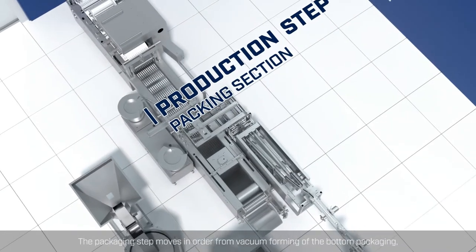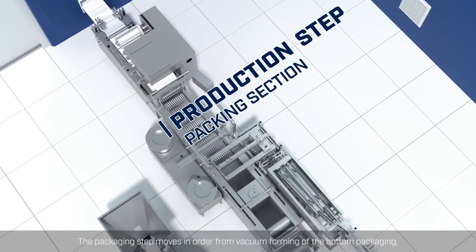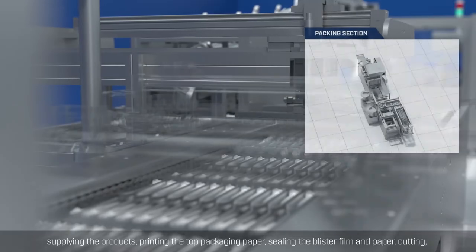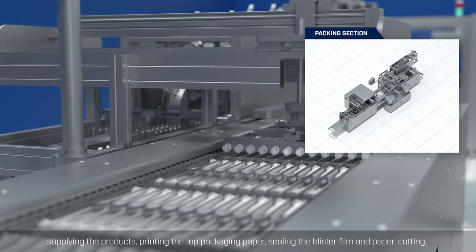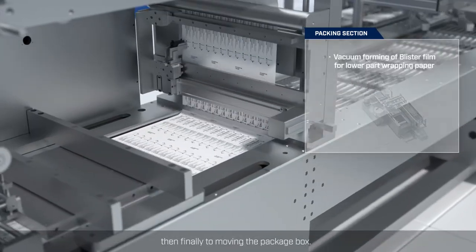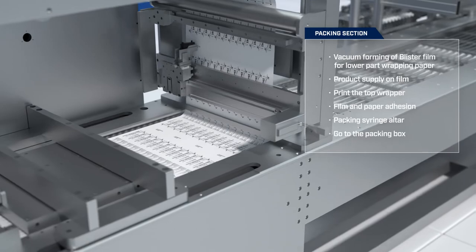The packaging step moves in order from vacuum foaming of the bottom packaging, supplying the products, printing the top packaging paper, sealing the blister film and paper, cutting, then finally to moving the package box.